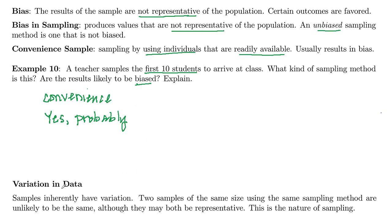Let's talk about variation in the data. When you choose a sample, there's some inherent variation in that sample. Even if you have two samples of the same size using the same sampling method, it's highly unlikely they're going to be the same sample, although they may both be representative. We saw this before when we did random sampling — we did two samples of the same size, five out of 50, and got two completely different samples, but they were both random and both probably representative. Just recognize that there's inherent variation in samples; samples will vary from one to the next. That's why we can't make a 100% confident conclusion in statistics — there's always some variation and uncertainty because of variation in sampling.